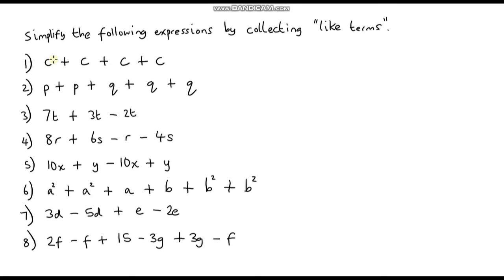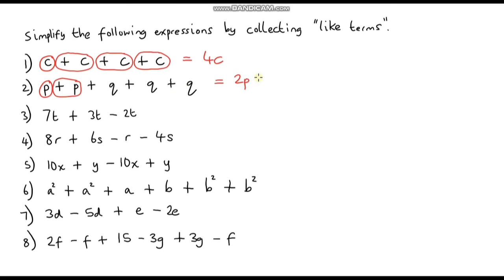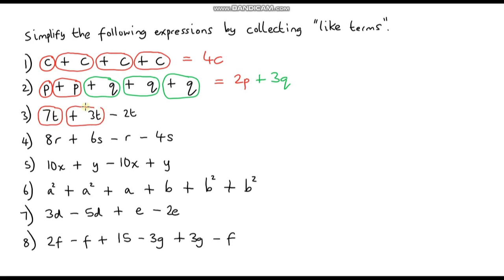Let's go through the answers. Question 1: we've got C plus C plus C plus C — that gives us 4C in total. Question 2: we've got a P term plus another P term, that's 2P. Then the Q terms: Q plus Q plus Q gives 3Q. So the answer is 2P plus 3Q. Question 3: starting with 7T, adding 3T gives 10T, then subtracting 2T leaves 8T.